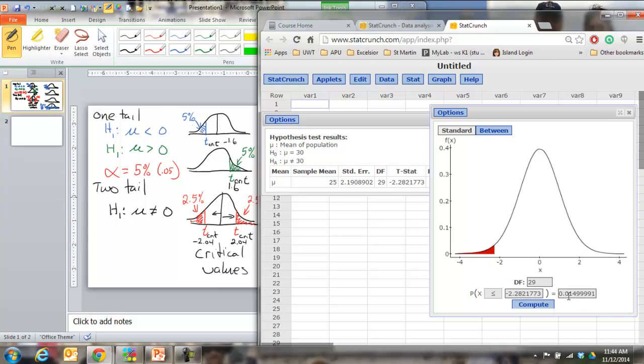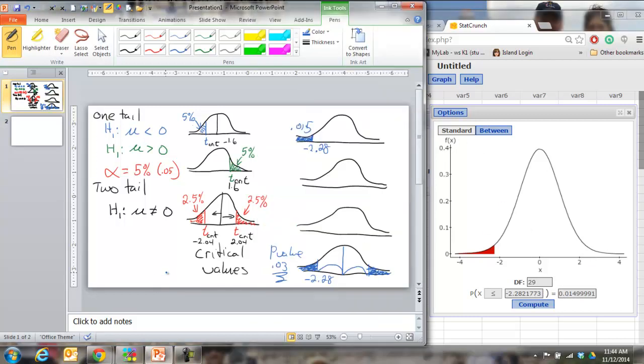The p-value it gives me is basically .015. But because it's a two tailed test I know that I have to also get the corresponding area above. So I would double this. But that's only because I was using the calculator. So the only time you guys are doubling is when you're using the calculators. If you're just running tests in StatCrunch the p-value you get is the p-value you want.